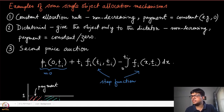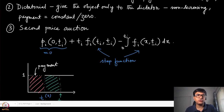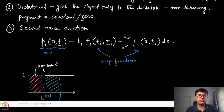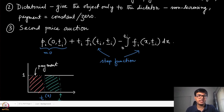The first interesting mechanism is that of the second price auction. We have already seen it in various contexts. Let us see why it falls in the same class and how we can pictorially represent the second price auction in the context of Myerson's characterization.